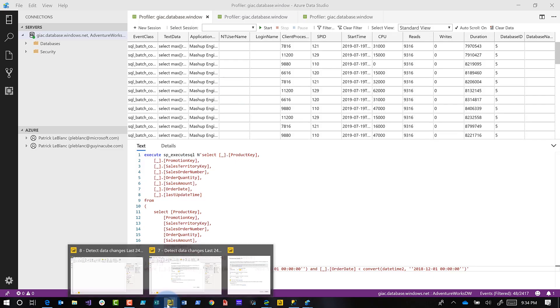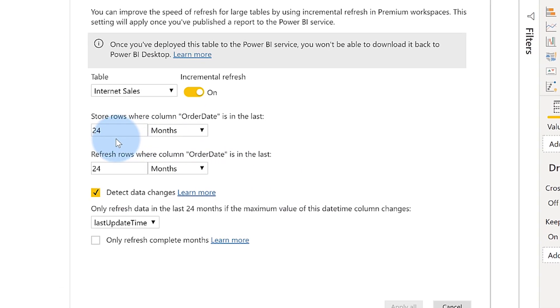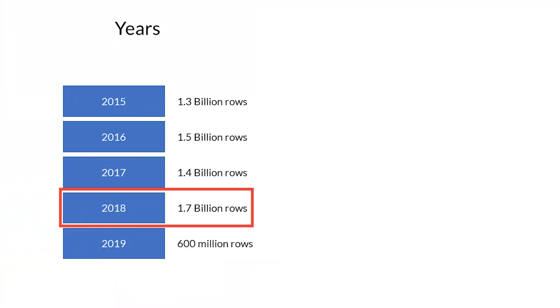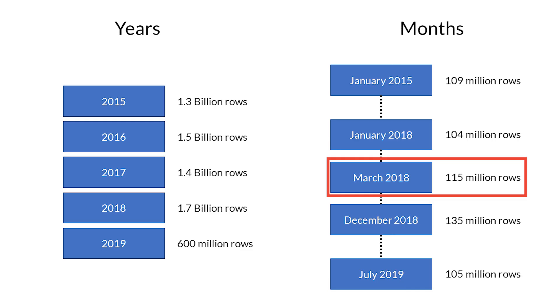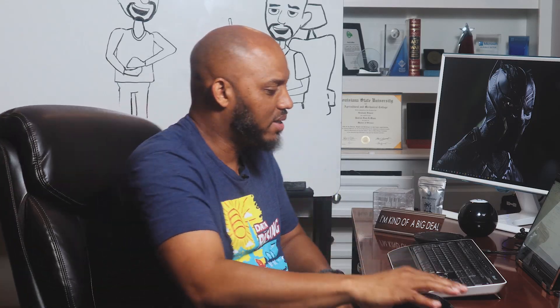Something I forgot to mention - if you go back here, you'll notice that I use months instead of years. I did that because if data changes in 2018, using years would refresh the entire 2018, which could be billions of rows of data. I want to minimize the amount of data I'm pulling from the database to reduce the time and the amount of memory needed to refresh my model. So instead of going after a year, I use a month.